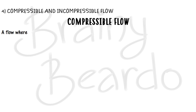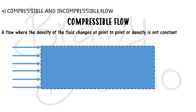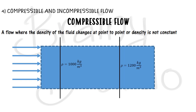The next category is compressible and incompressible flow. Compressible flow is a flow where the density of the fluid particles changes from point to point — the density is not constant and keeps varying during the fluid flow. For example, at the first section the density is 1000 kg/m³, and at the second section it changes to around 1200 kg/m³. This happens mainly due to change in volume, and primarily occurs in gases.